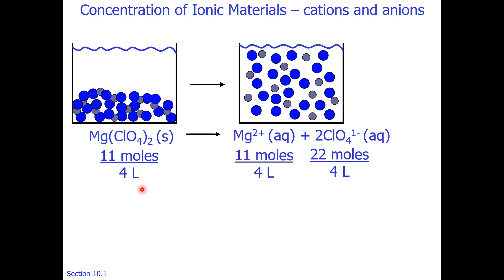Remember that even though we're doing concentrations, stoichiometry and coefficients are important. Notice the ratio of coefficients is 1 to 1 to 2. So if we start out with 11 moles in 4 liters, this will produce 1 piece, so that would be 11 moles. The perchlorate would be 2 pieces, so that is 22 moles.